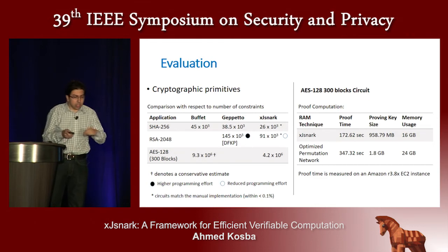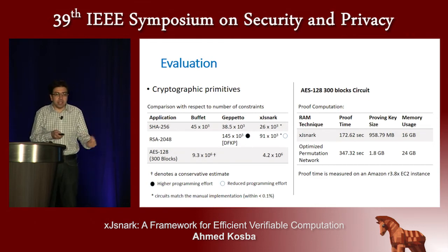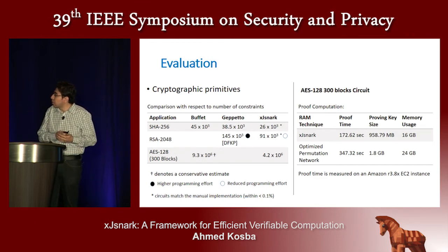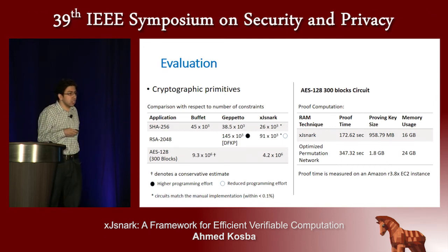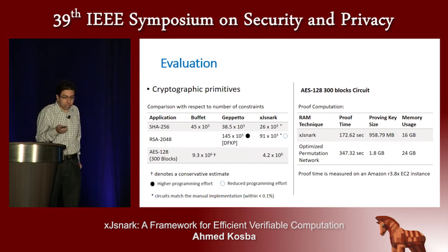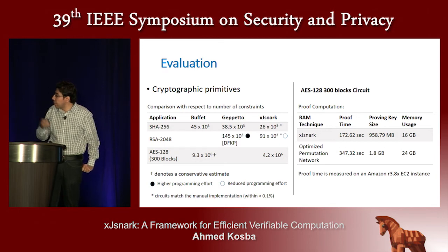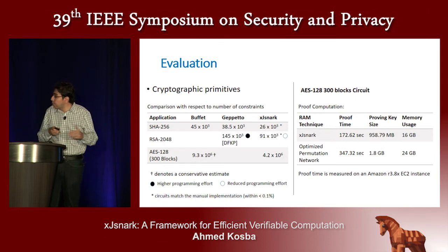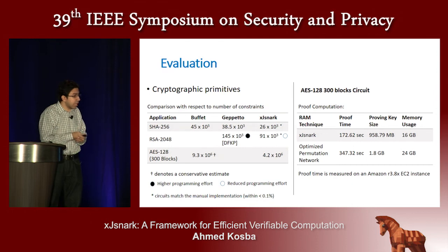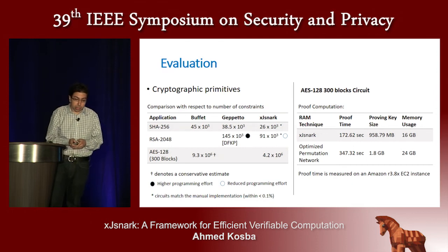To give a sense of why these things are useful: we compare proof time, proving key size, and memory usage when applying our optimization. For example, for AES with a 300-block circuit, we see improvements across all aspects including proof time, proving key size, and memory usage.